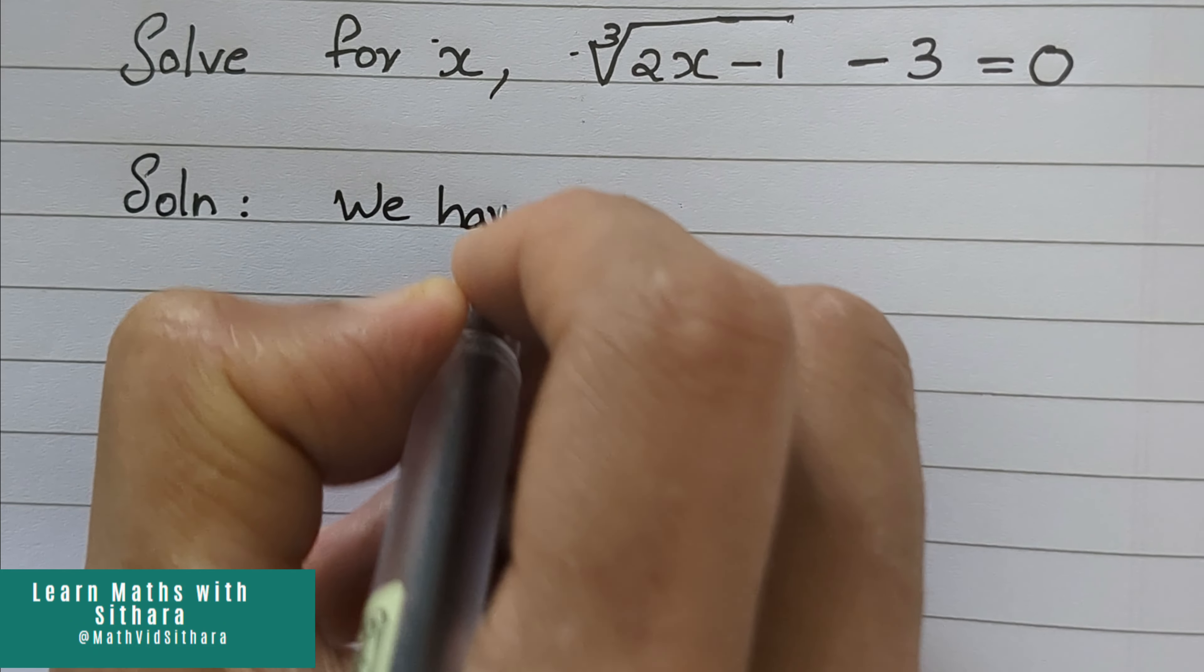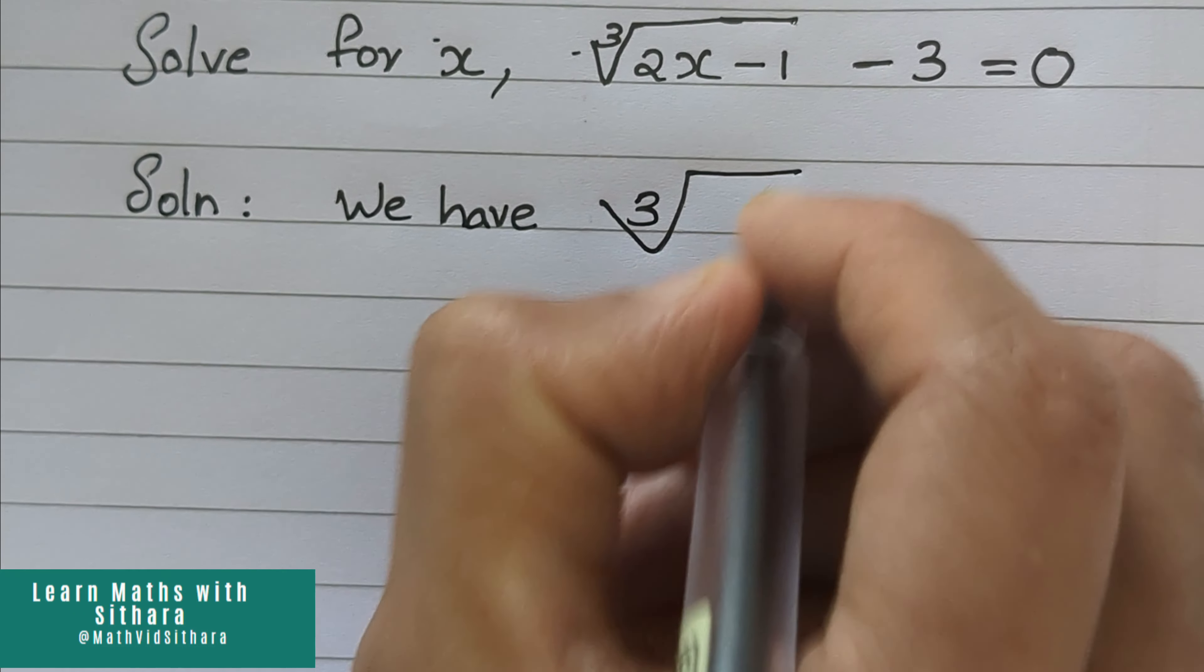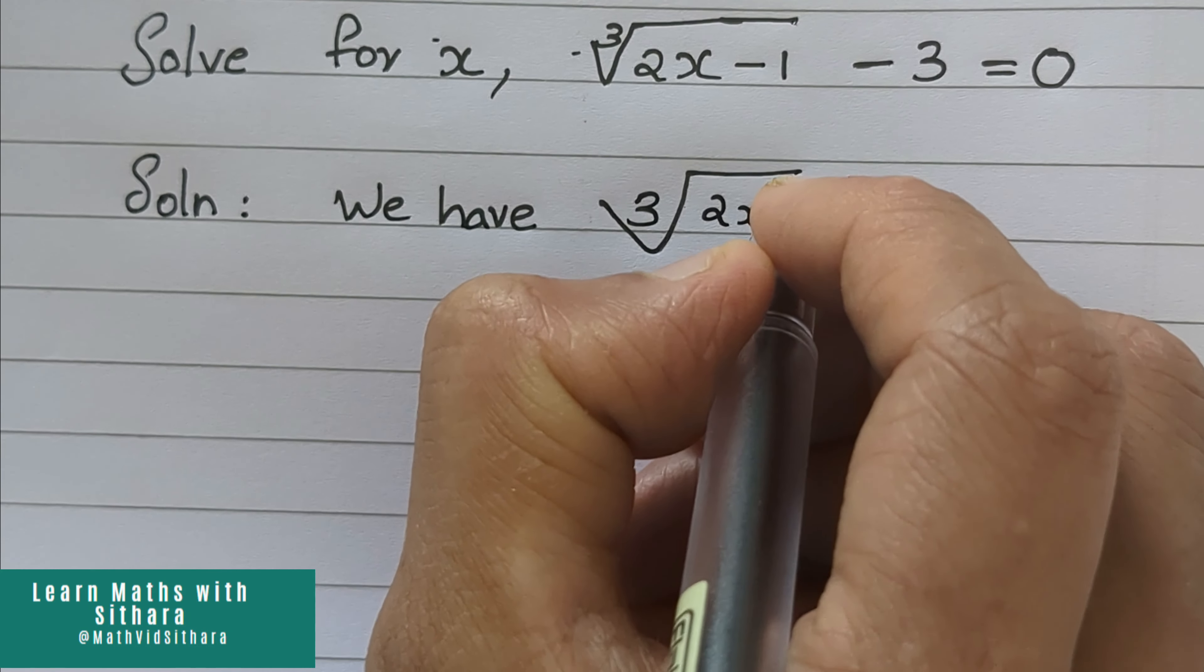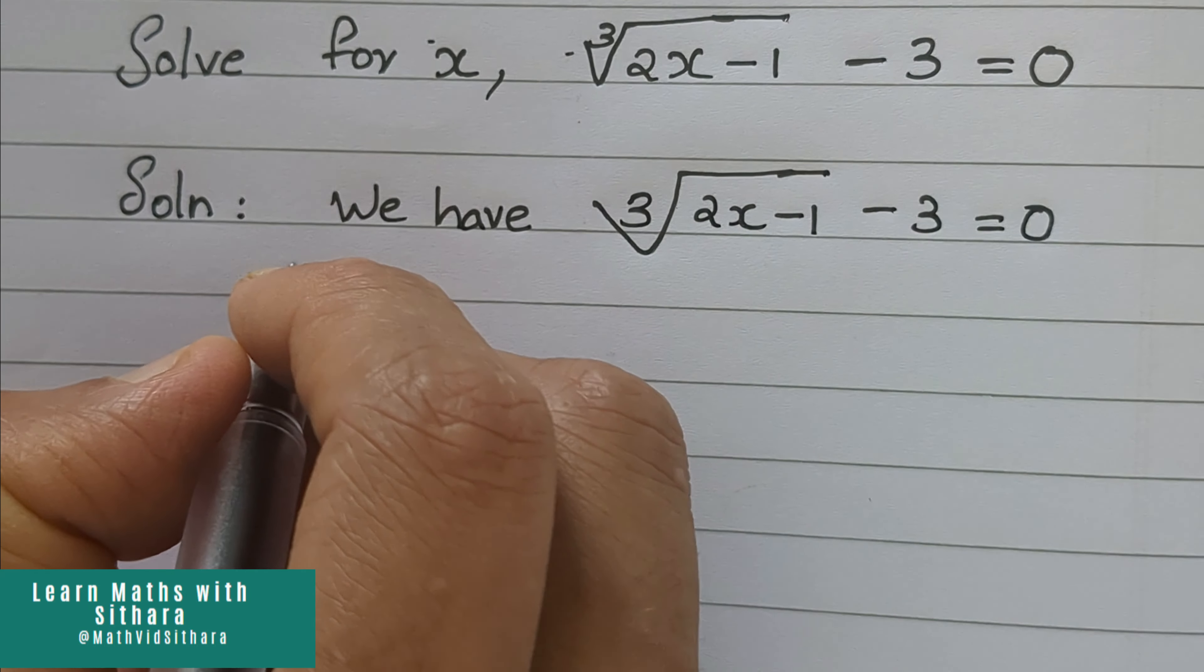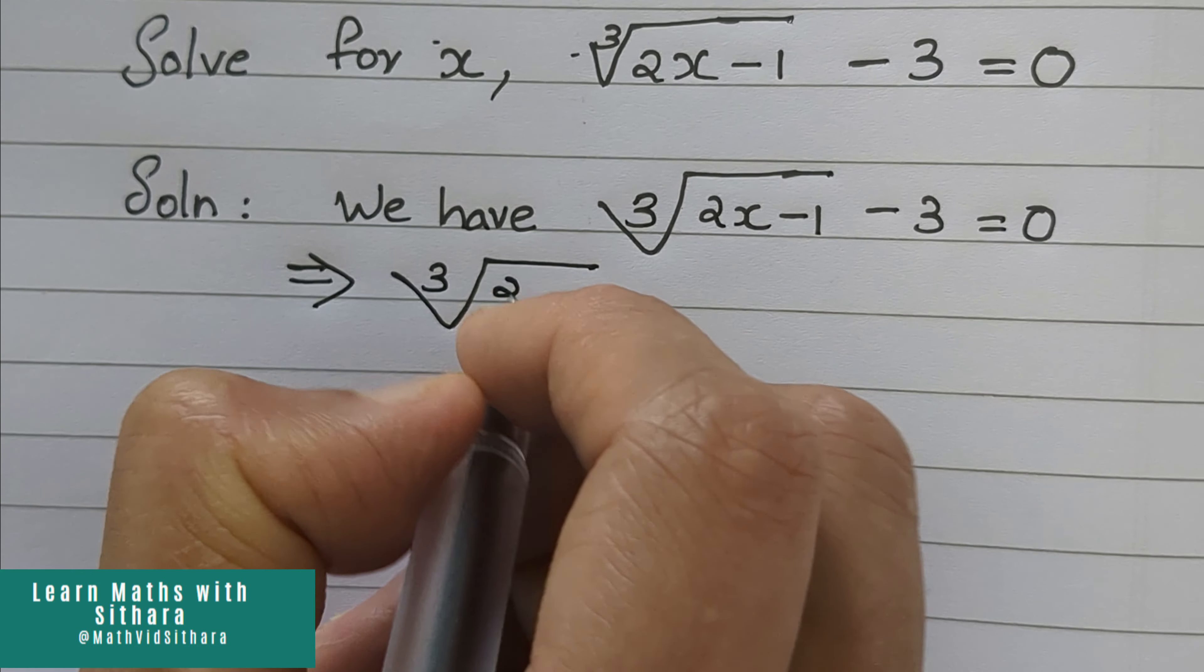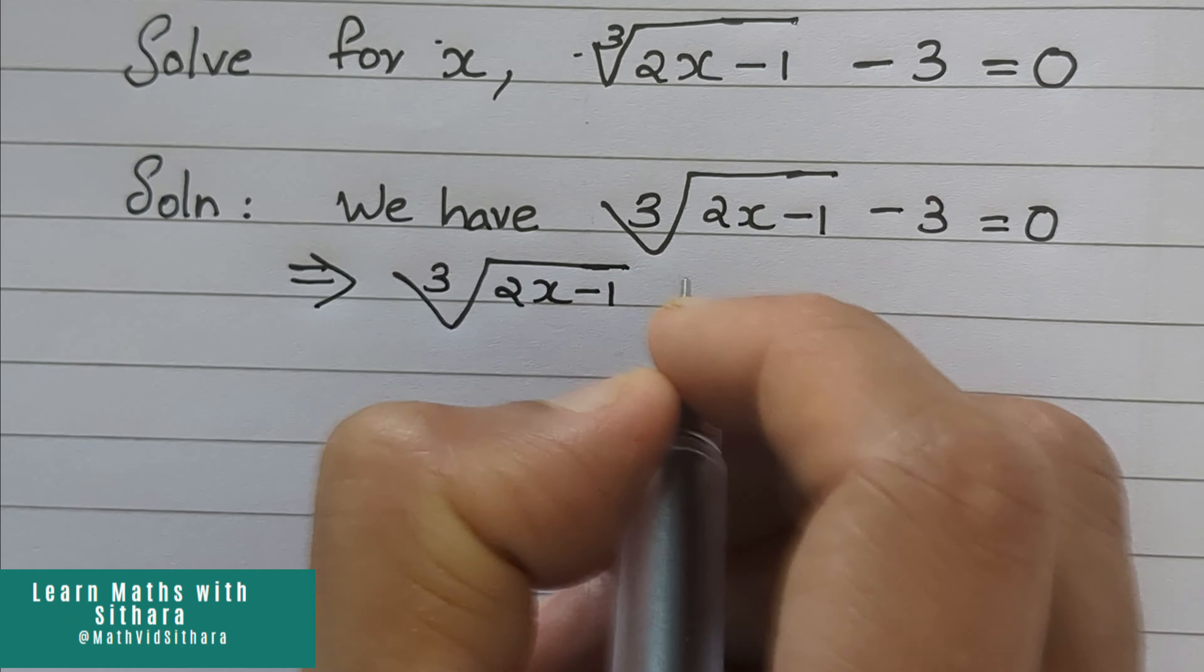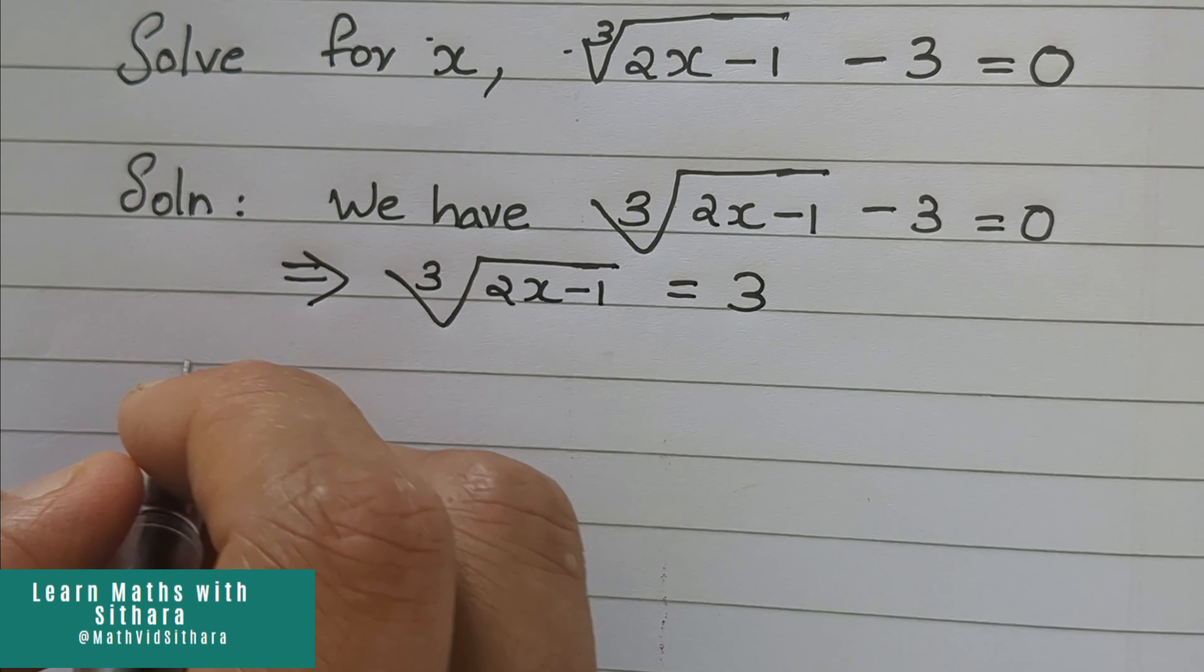We have the equation 3 root 2x minus 1 minus 3 equal to 0. Now we have to move minus 3 to the other side of the equation, that is 3 root 2x minus 1 equal to 3.